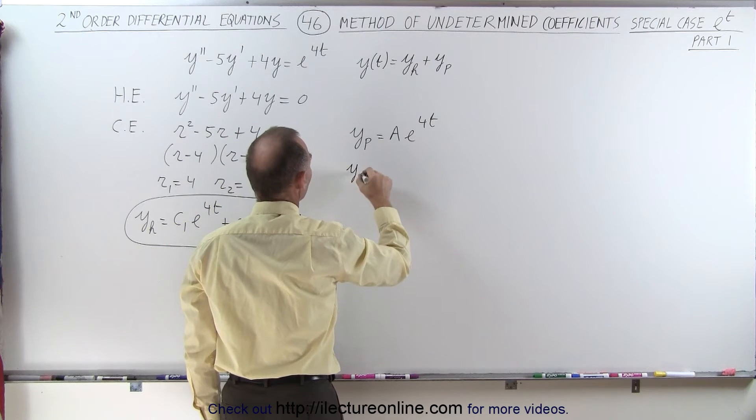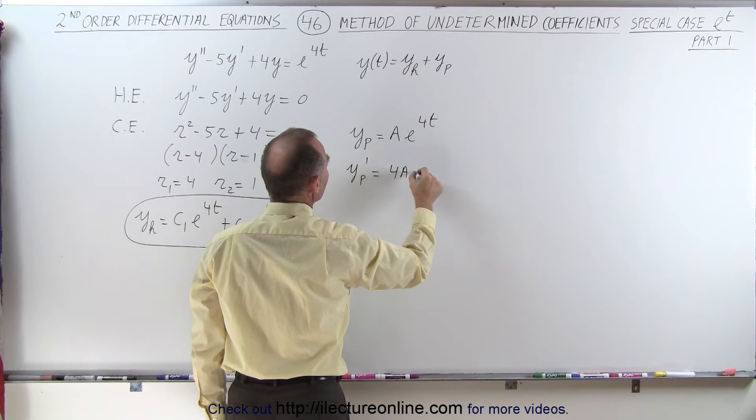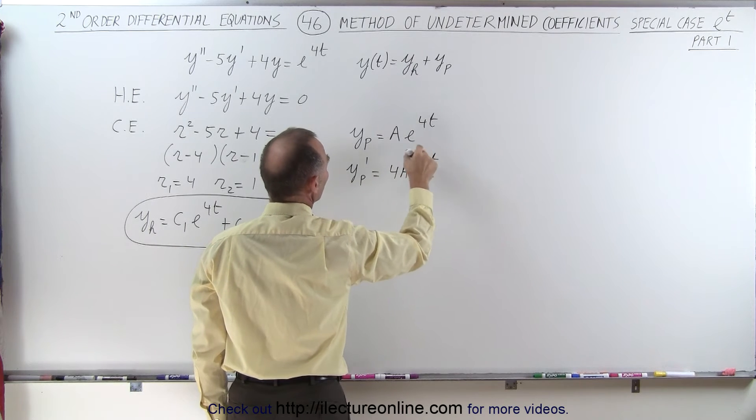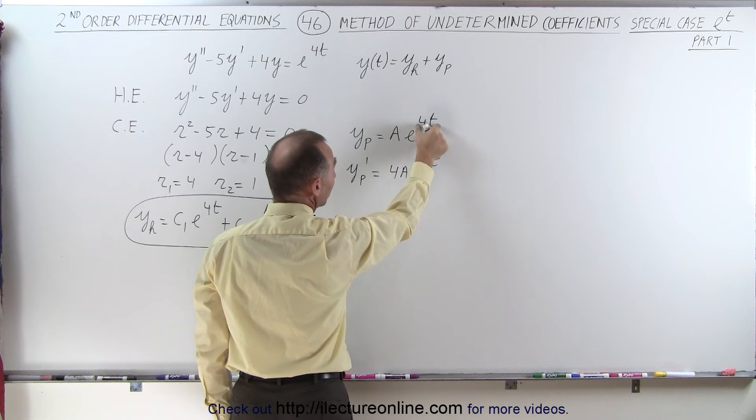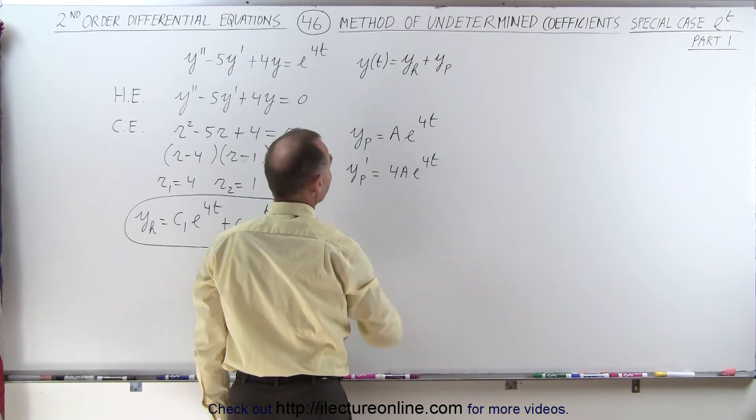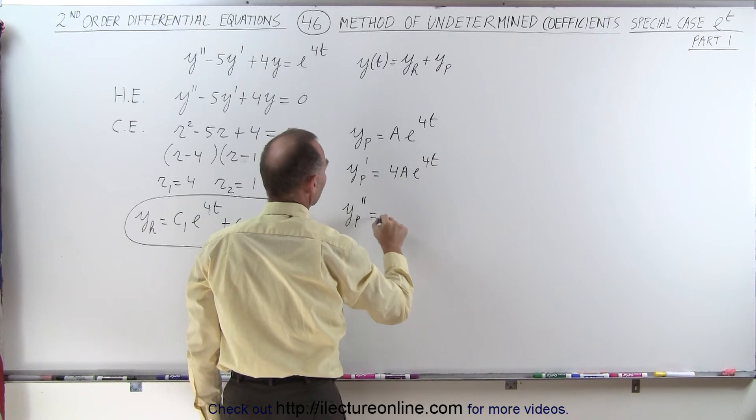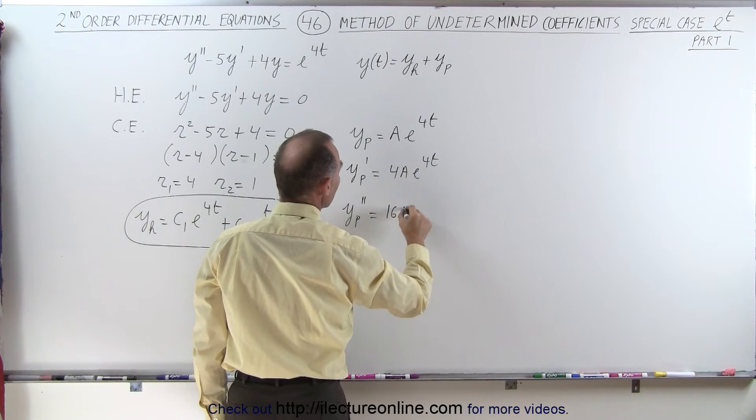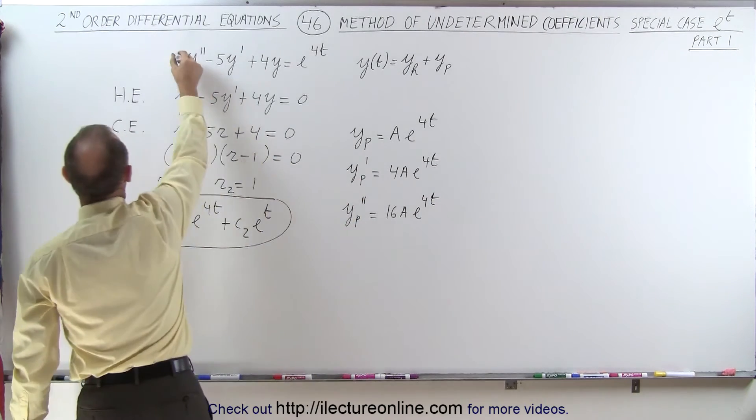So first we take y p prime, which is equal to 4a e to the 4t, because the derivative of e to the 4t is e to the 4t, times the derivative of the exponent, which is 4. And y double prime is going to be equal to 16a e to the 4t.